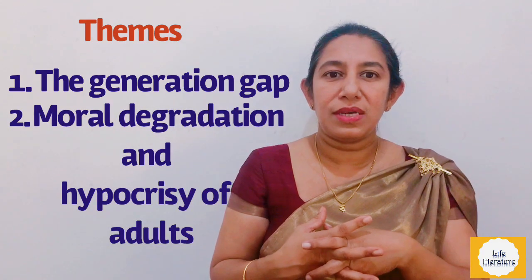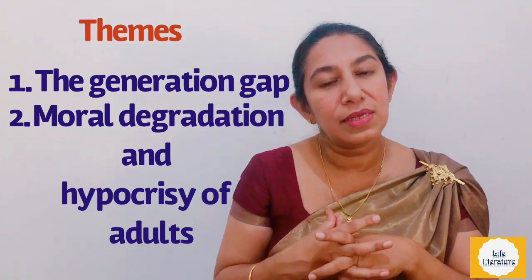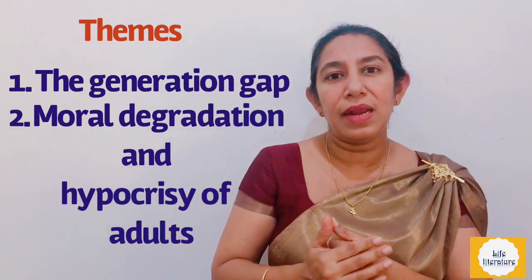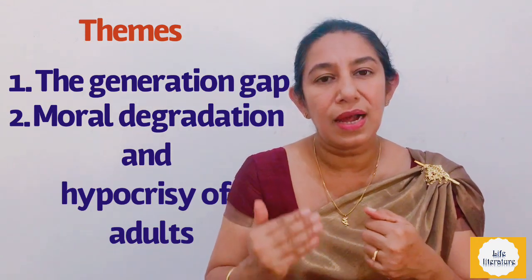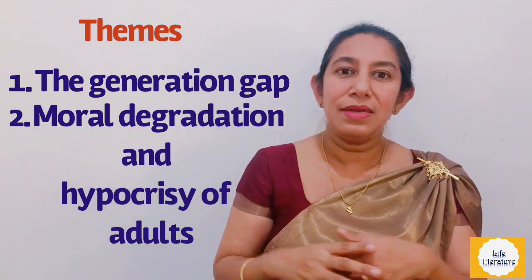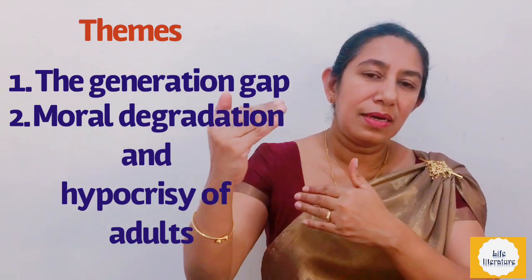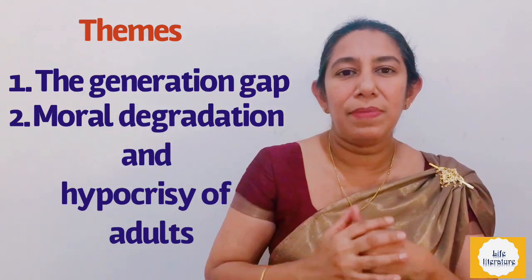The second theme is the moral degradation and hypocrisy of adults. Adults in this type of society don't have good values and are very hypocritical. Those are the two major basic themes we come across in the short story Lumber Room. I hope you have got a good idea about Lumber Room through this video, and we'll be meeting with another video very soon. Till then, goodbye.